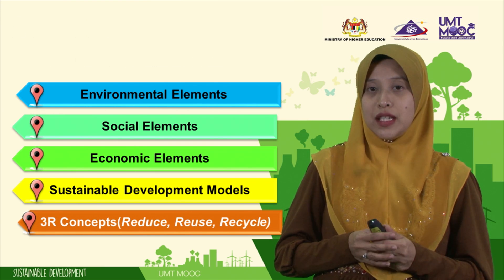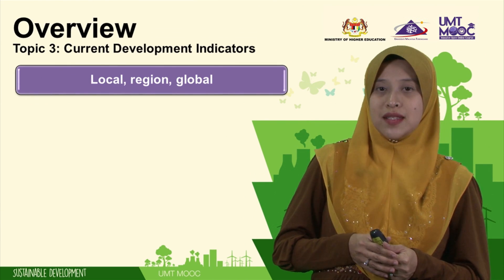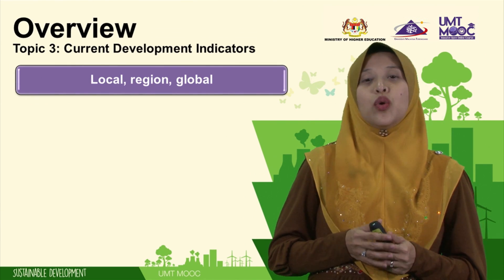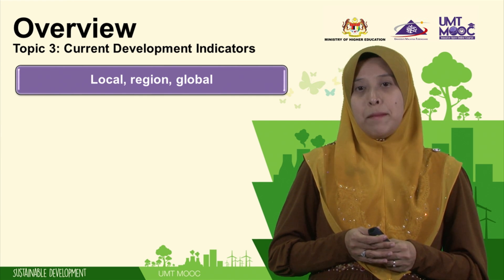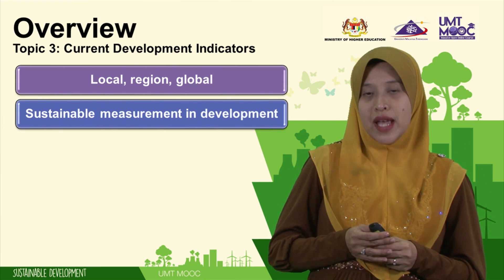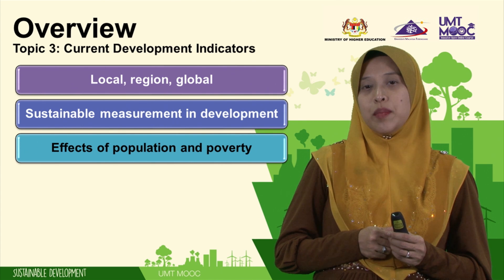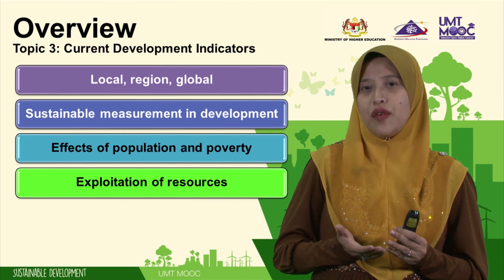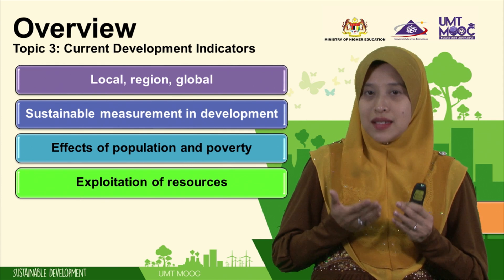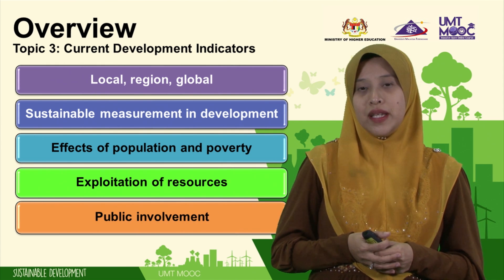Next, in Topic 3, Current Development Indicators is the title, which will cover SD locally, regionally, and globally — measuring it in reality. What are the effects of population and poverty? What happens to the exploitation of resources? And what has been done in the context of public involvement?